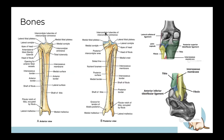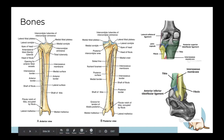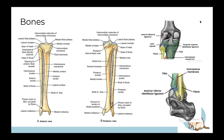Next to the bones we have two tibiofibular joints — one at the top and one at the bottom. There is an anterior inferior ligament at the inferior end and a posterior superior ligament connecting the two at the top end. Just remember which one is posterior and which one is anterior.